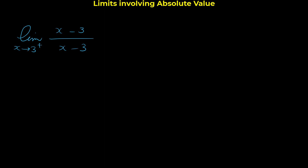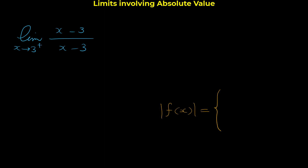Let me tell you the general way to get rid of the absolute value in limits. Say we have |f(x)|, where f(x) can be anything — x-3, x²+1, x·sin(x), or any other function. To get rid of the absolute value, you need to know the sign of the expression inside. If f(x) ≥ 0, then |f(x)| simply equals f(x) — the original expression, already positive, so no absolute is needed.